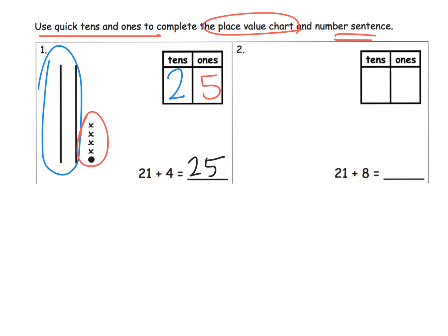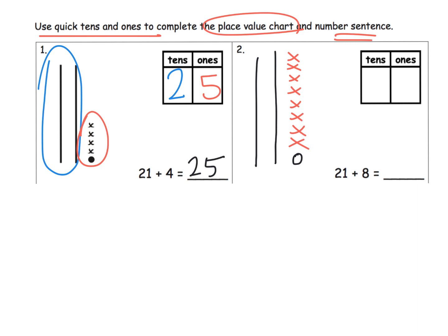We're going to start by building 21: here's a 10, here's a 10, and there's our one — we just built 21. Now we need to add on the eight: one, two, three, four, five, six, seven, eight. How many tens do we have? Two tens. How many ones do we have altogether? We had one here plus eight more, so we have nine ones. That means we end up with 29.